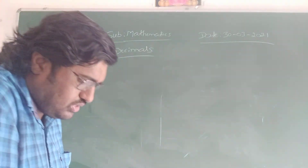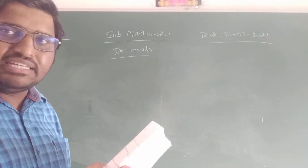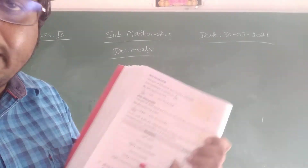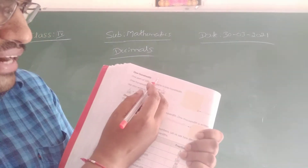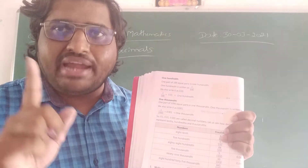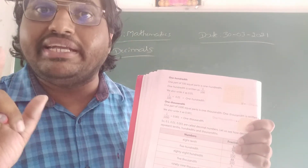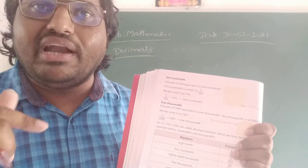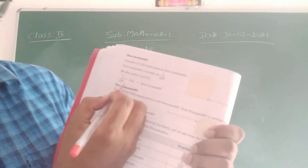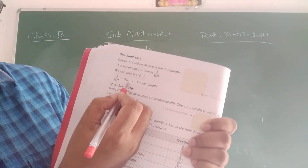Now, second one children — one hundredth. One tenth means one by ten. One hundredth means one by hundred. Keep it in your mind: one tenth means one by ten, one hundredth means one by hundred, and one by hundred can be written as 0.01.